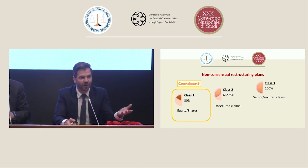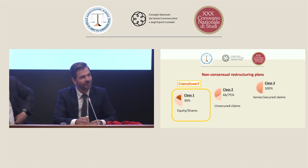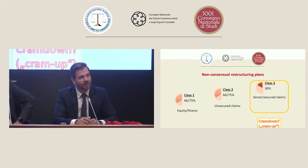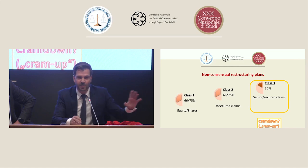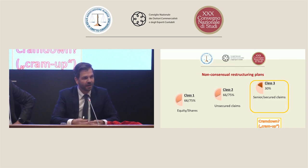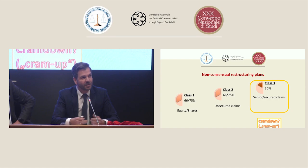Ci dovrà essere un cram down che comprime gli interessi e i diritti di questa categoria, di questo gruppo di parti interessate. E poi c'è anche la fattispecie opposta: può accadere che i soci siano assolutamente d'accordo col piano, così come i chirografari, ma magari le banche o anche il fisco possono non approvare — ed è un evento frequente.